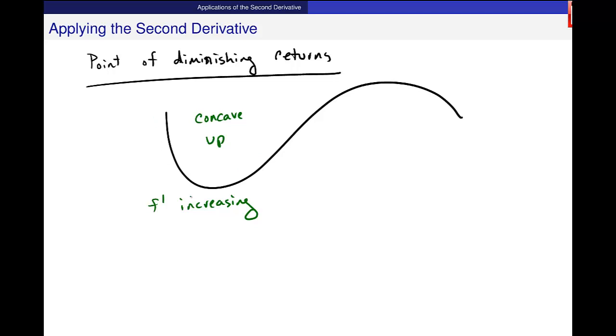So here's my point. I'm getting more out of my function the more I change. And here, when I change to concave down, f prime is decreasing. And I start to get less and less, the rate is actually decreasing.